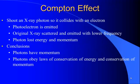until around 1922 when American physicist Arthur Compton performed a very famous experiment. He shot an X-ray photon so it collided with an electron in a piece of graphite. He saw that a photoelectron was emitted, but the original X-ray was scattered and re-emitted with a lower frequency. It had lost some energy and some momentum.